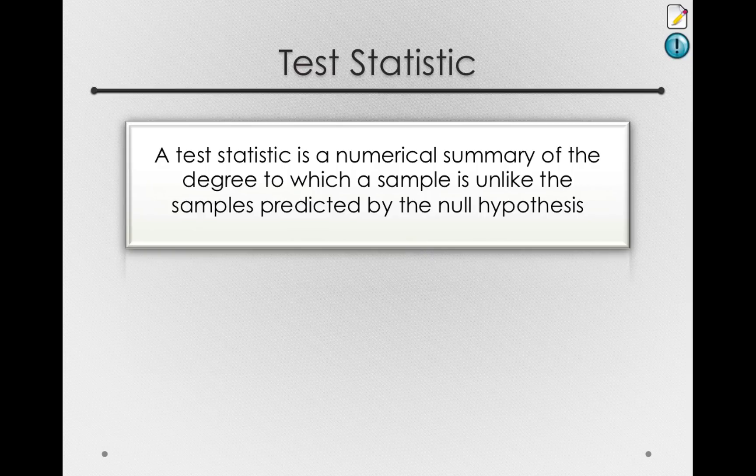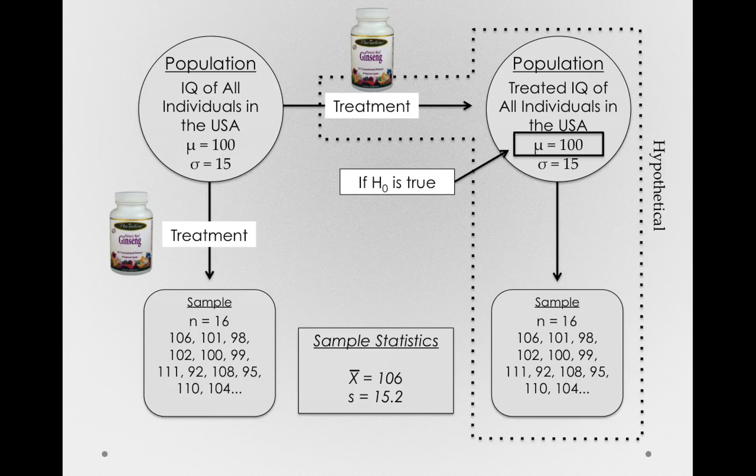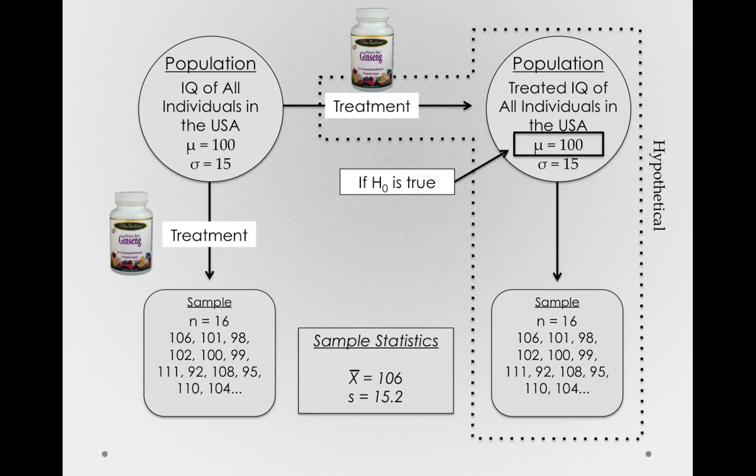In our case, the test statistic will just embody the degree to which our sample mean is unlike the population mean after treatment, assuming the null hypothesis is true. In this case, the degree to which 106 is different from 100.